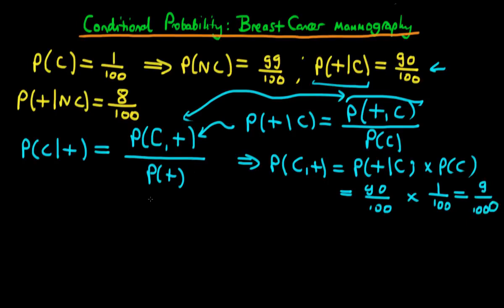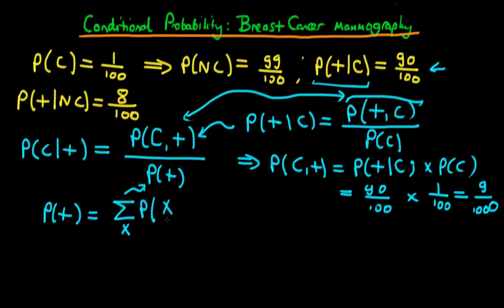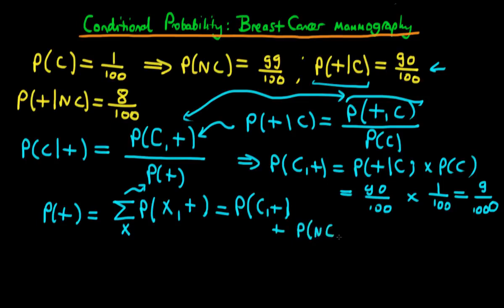The denominator is a little more involved: working out the probability that an individual tests positive. But it's not much more involved because we already know our rule for calculating marginal probabilities. To get the probability that an individual tests positive, we sum over all cases of the joint probability — where x denotes the cancer status of an individual. This is the same as the probability that an individual has cancer and tests positive, which we already know, plus the probability that an individual doesn't have cancer and tests positive.